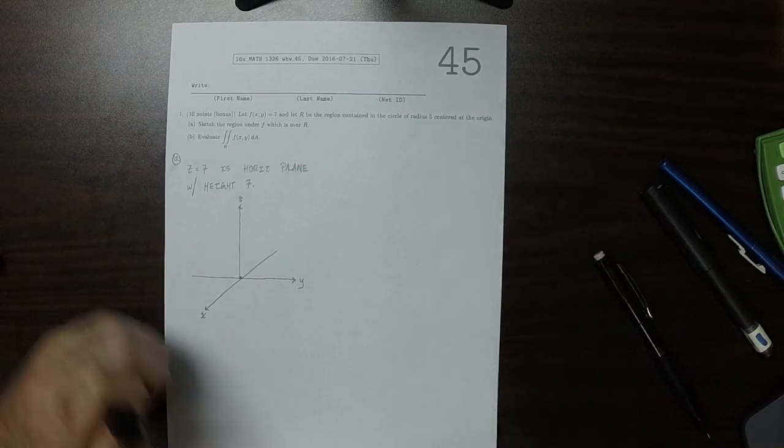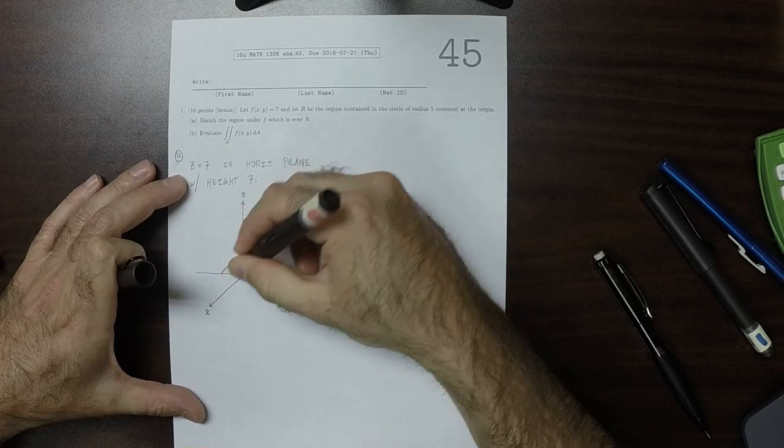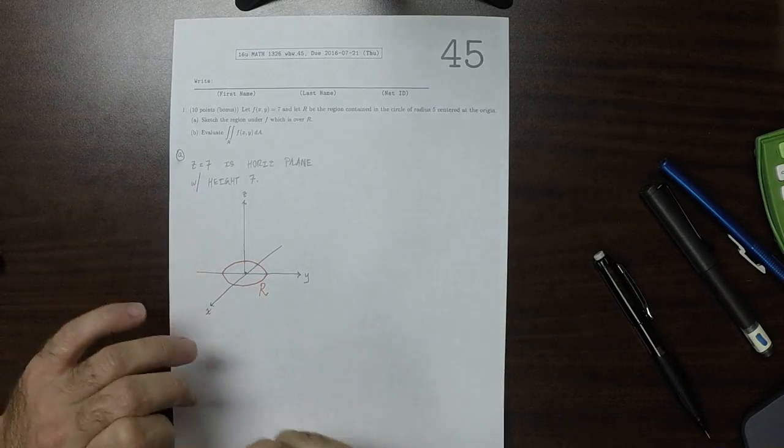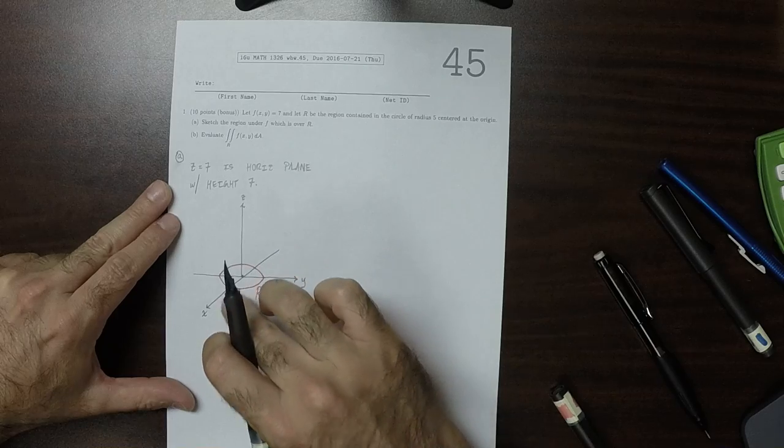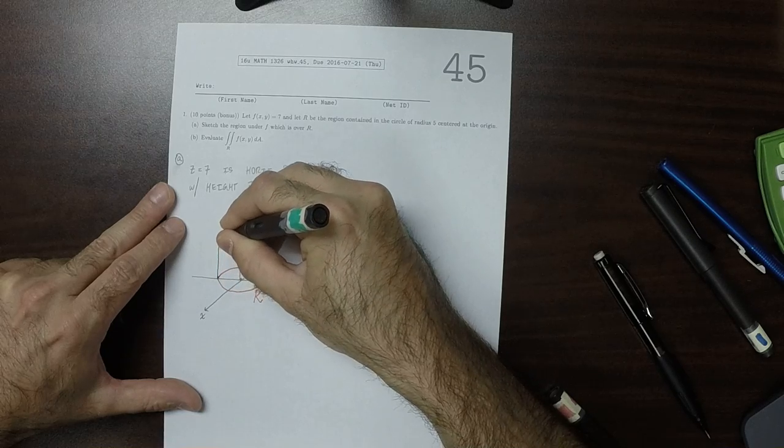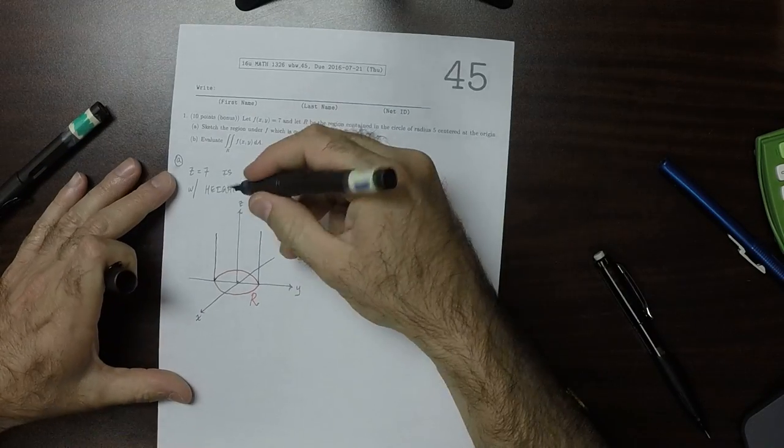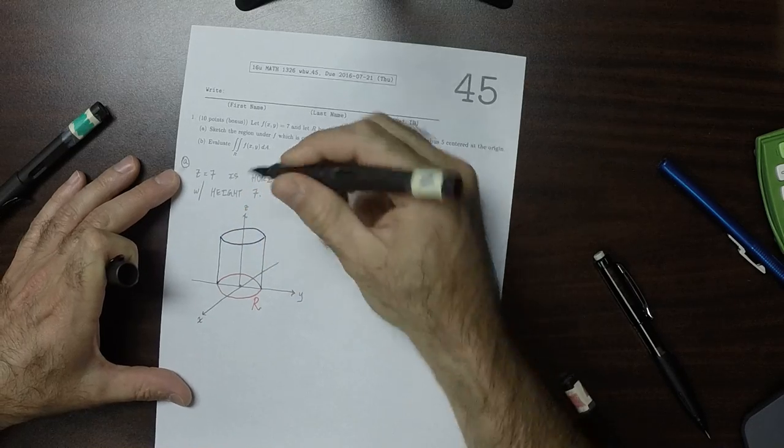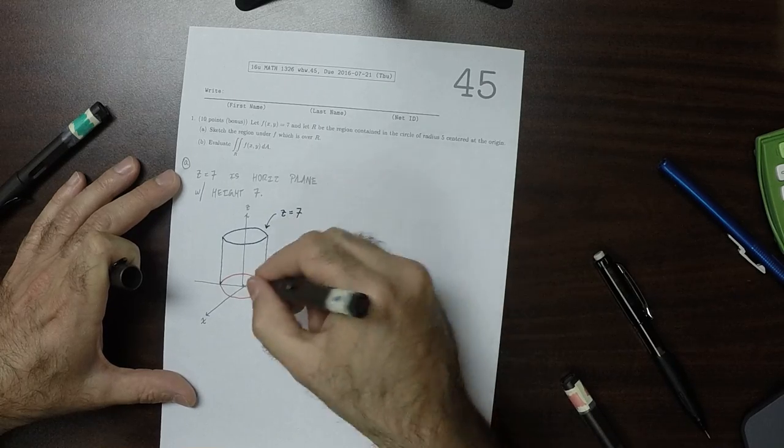The region R is this circle. And then we want a plane which is at height 7, just the part that is above the circle. So this is z equals 7, just the part that's above the circle.